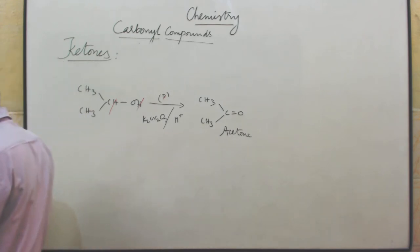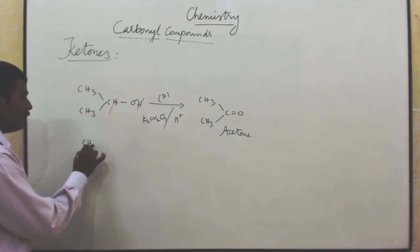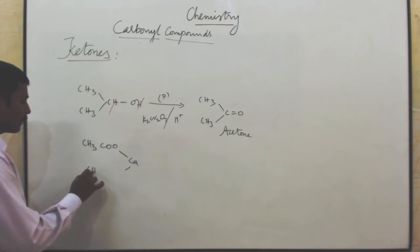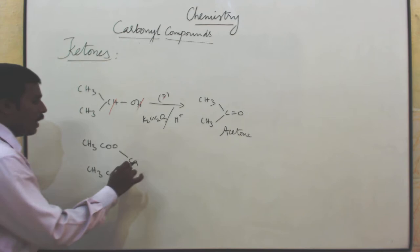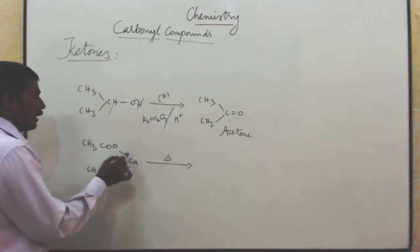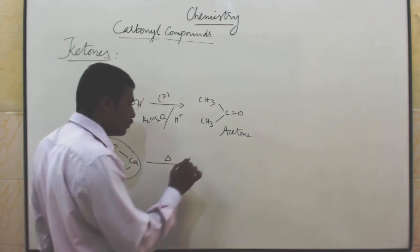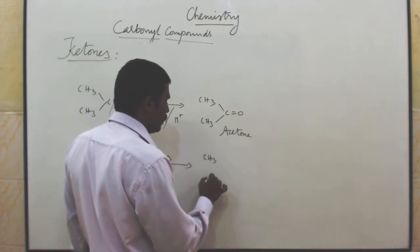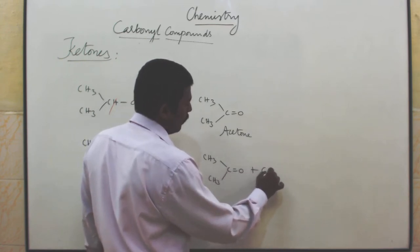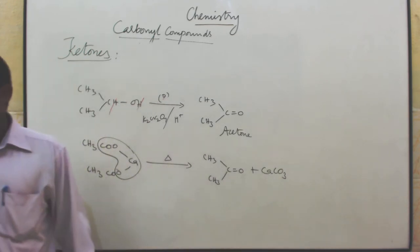Very same thing, calcium acetate undergoes dry distillation reaction. Calcium acetate, CH3COO-Ca-OOCCH3, undergoes dry distillation. The remaining product is acetone: CH3COCH3 plus calcium carbonate CaCO3. In that way also we can prepare acetone.